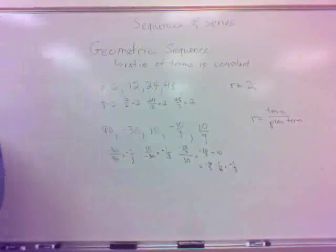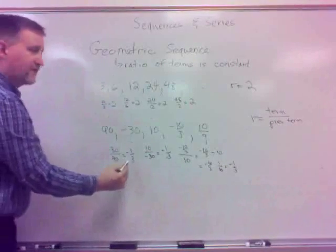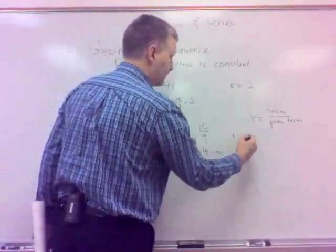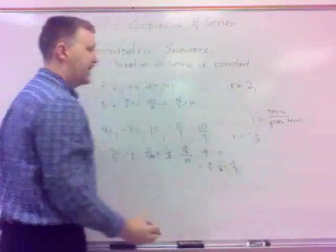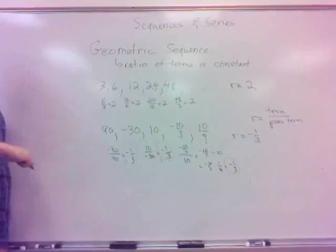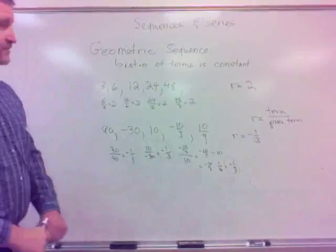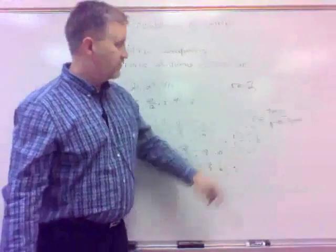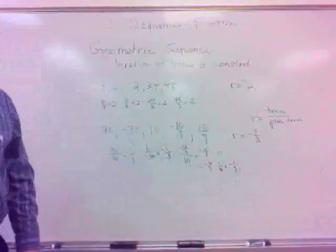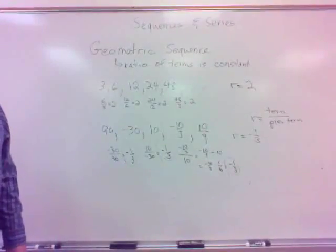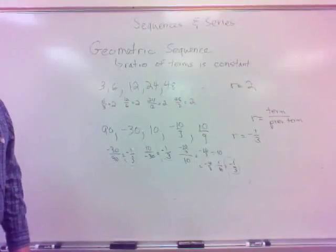So anyway, what's the ratio here? Negative one-third. Keep that in mind. You divide, you take a term, divide it by the previous term. So sometimes you get a negative ratio, and also note there, sometimes you also get a ratio that's less than one.